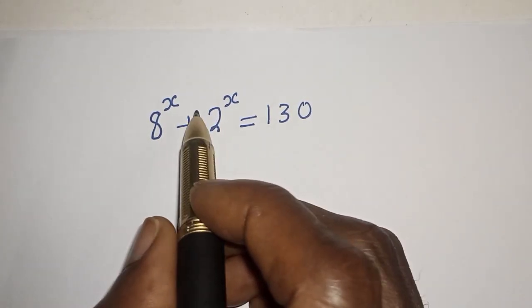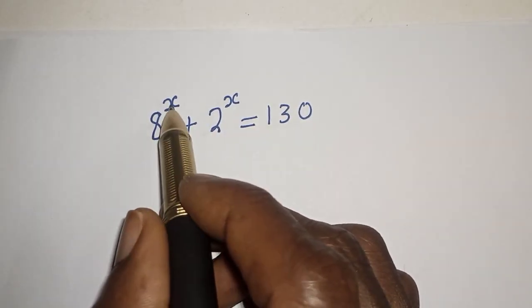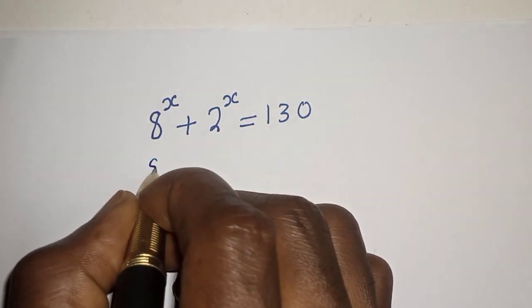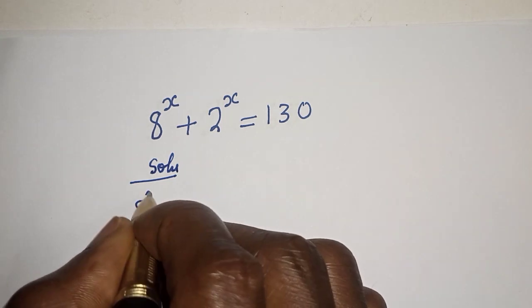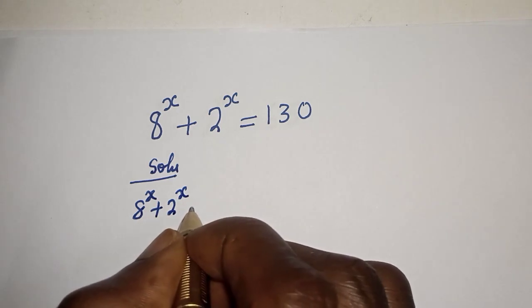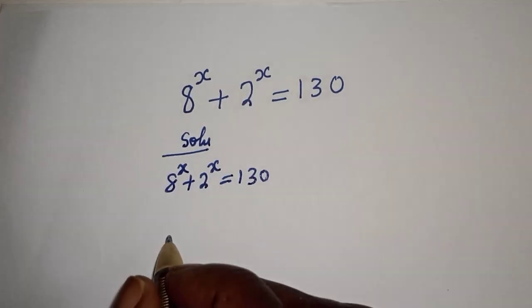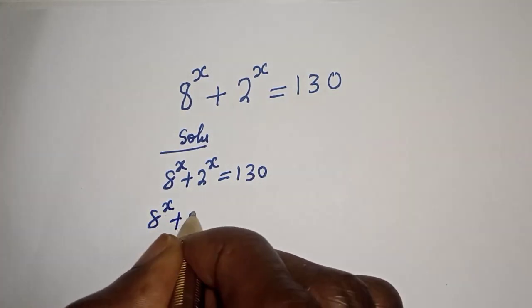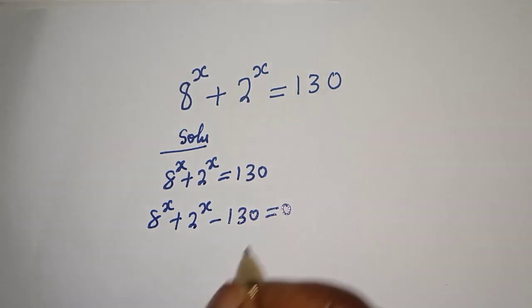Hello, welcome to Magist. In this class we want to find the value of s from this equation: h raised to power s plus 2 raised to power s is equal to 130. Then h raised to power s plus 2 raised to power s minus 130 is equal to 0.